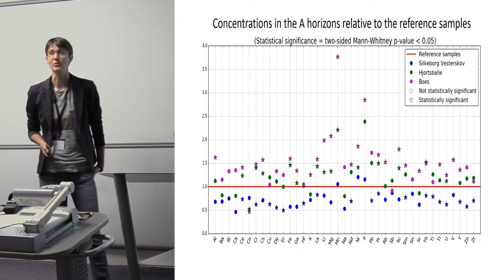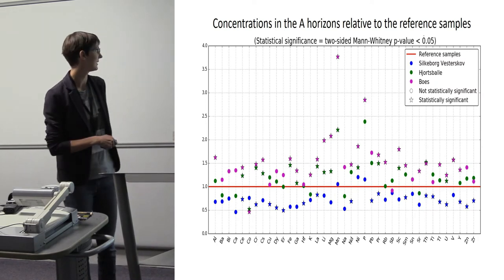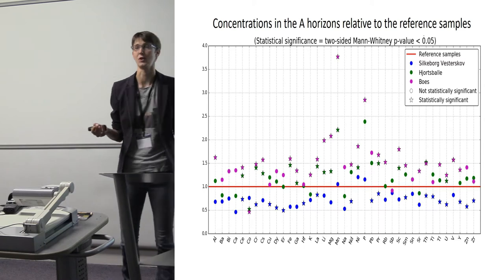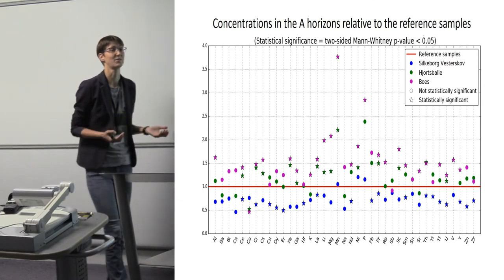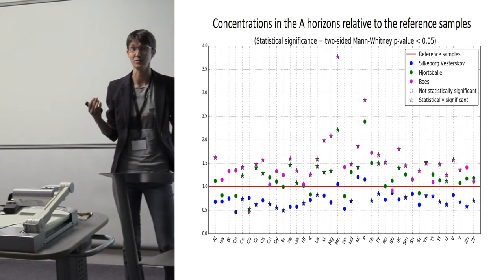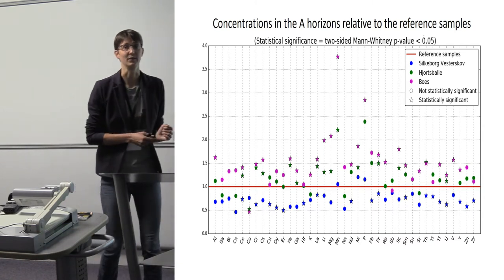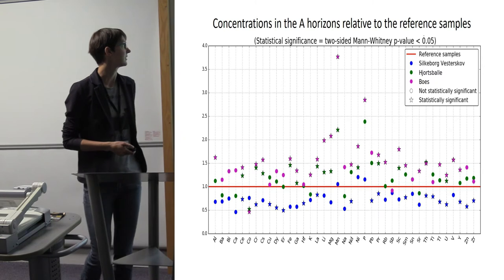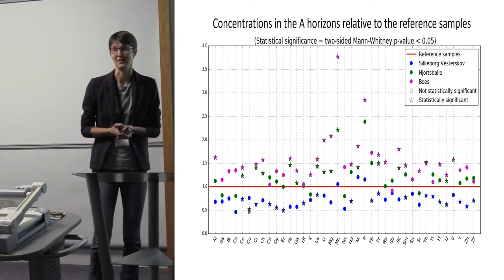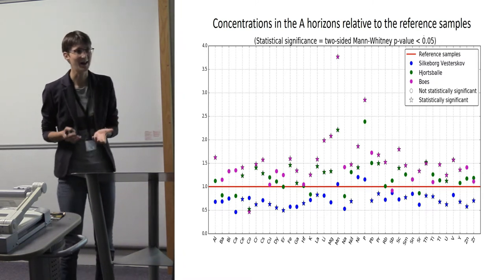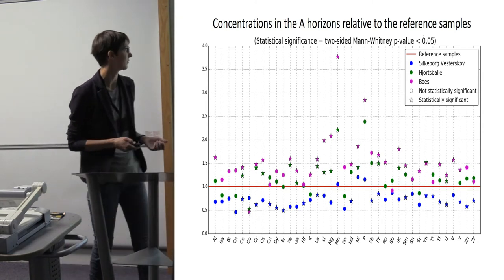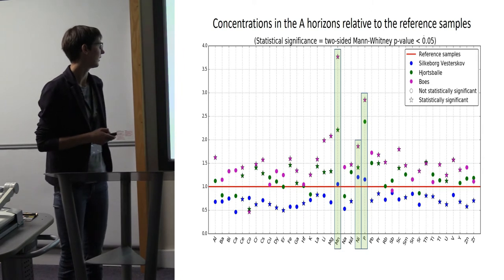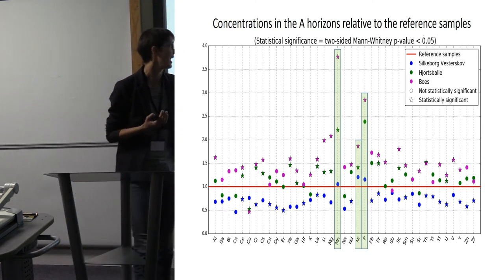If you look at the concentrations in the A horizons relative to reference samples, we have Silkeborg-Vesterskøv down here, Holtkratz concentrations here, and on top we have the concentrations from Boeskål. This probably reflects differences in the parent material as indicated by the PCA. The soil at Boeskål was more nutrient rich than at Silkeborg-Vesterskøv. This makes it quite difficult to identify variations between different sites.